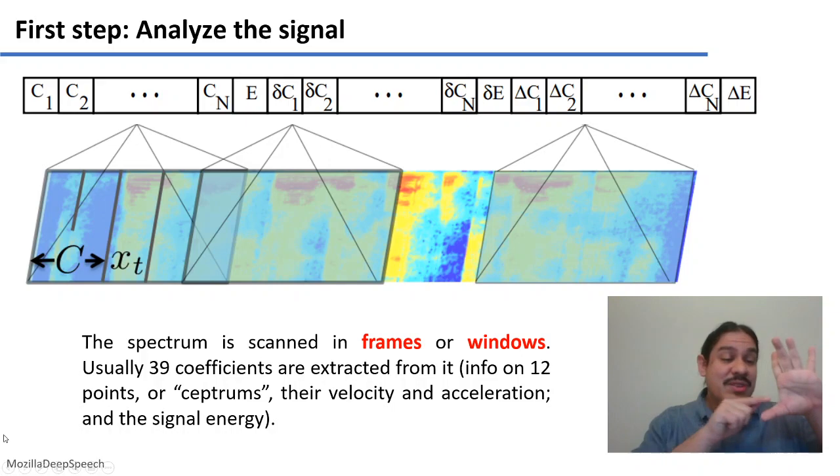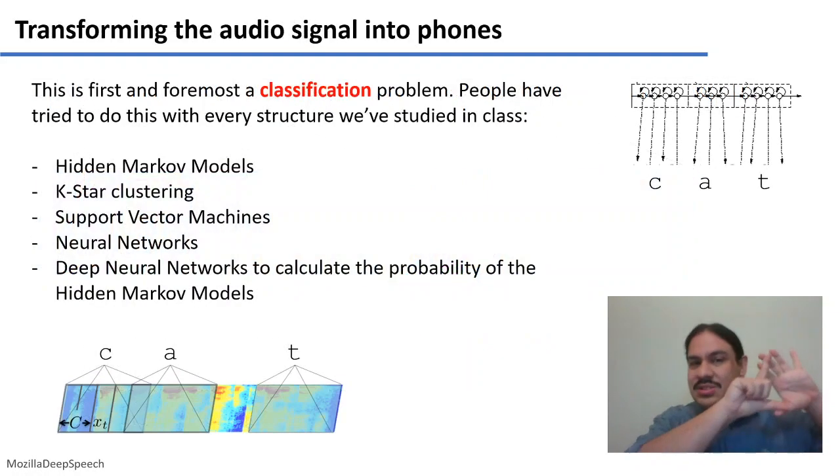The system Deep Speech, for example, extracts 39 pieces of information from each window. Once you have that, you send the extracted information to essentially a classification system.